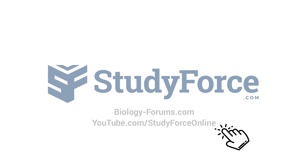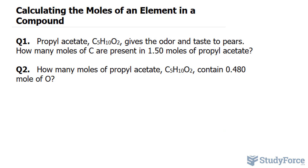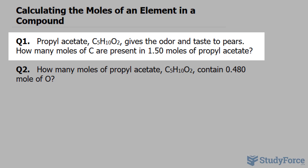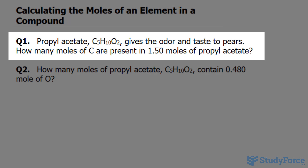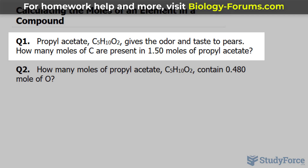In this lesson, I'll show you how to calculate the moles of an element in a compound. Question 1 reads: propyl acetate with the chemical formula C5H10O2 gives the odor and taste to pears.